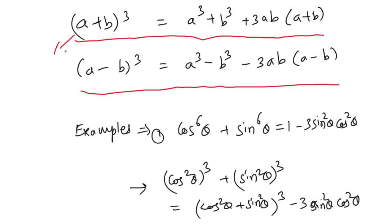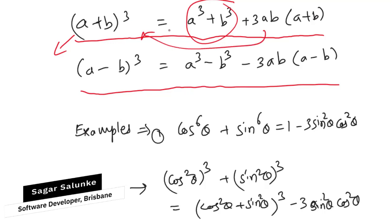And this can be written as a³ + b³ = (a+b)³ - 3ab(a+b).